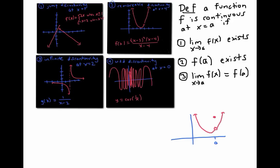Sometimes the definition of continuity is written with just the third condition, and the first two conditions are implied. Notice that these three conditions not only exclude jump discontinuities and removable discontinuities — they also exclude infinite discontinuities and wild discontinuities.